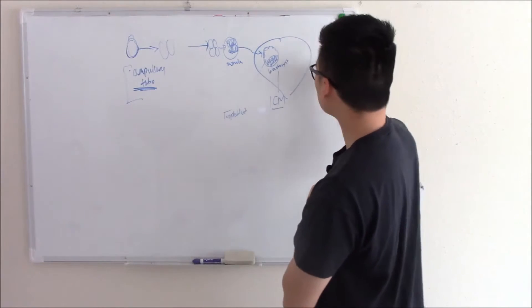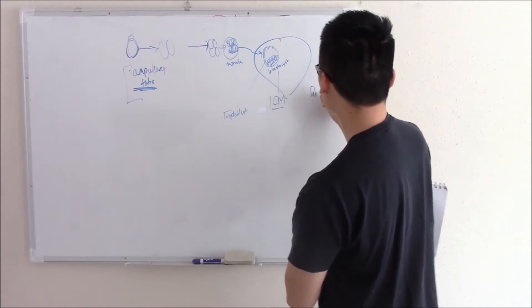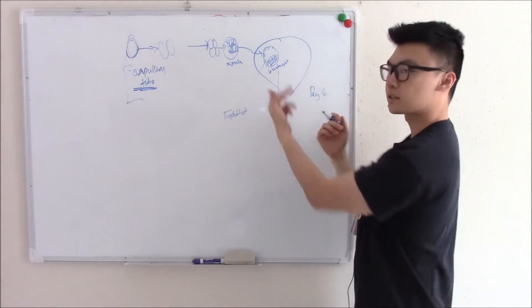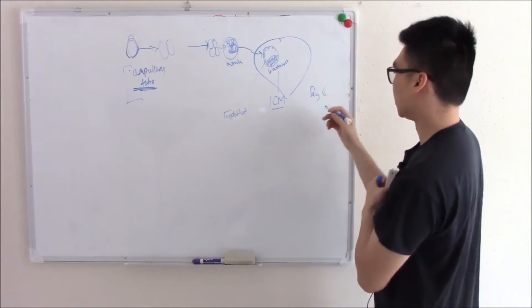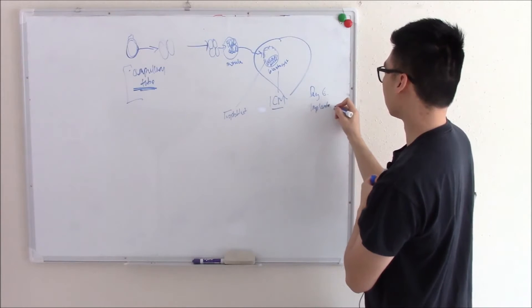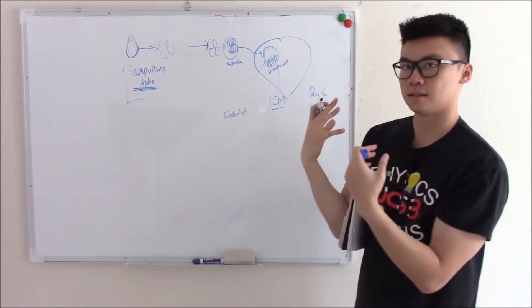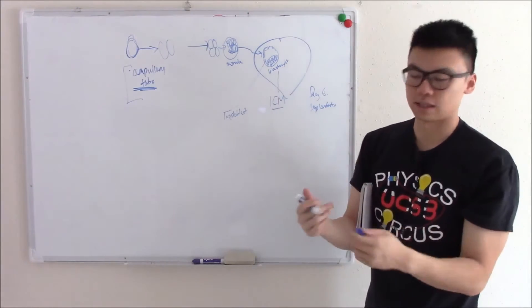At around day six, your blastocyst will stick to the uterus and implant. Day six implantation, or you can just think of day six sticks to the uterus. Six and sticks sound alike.